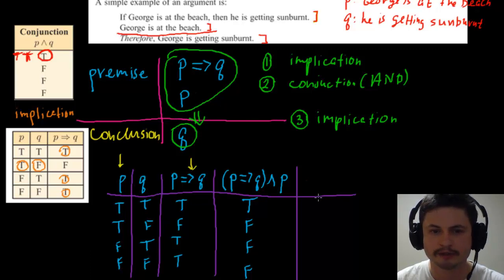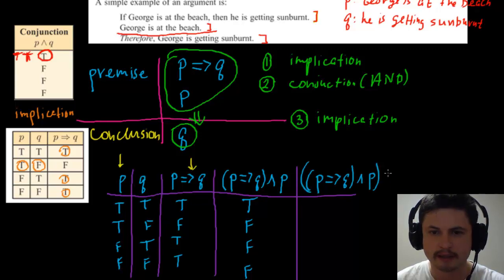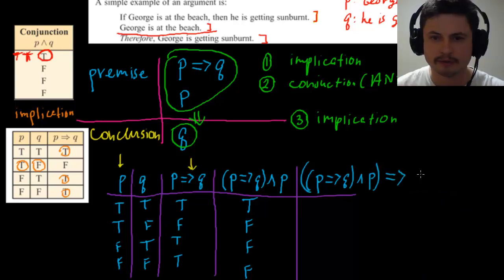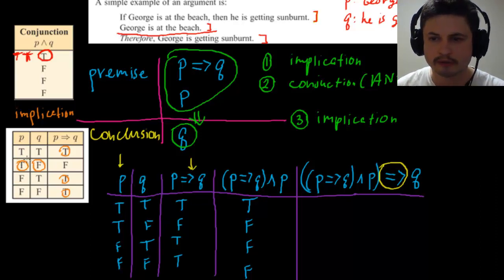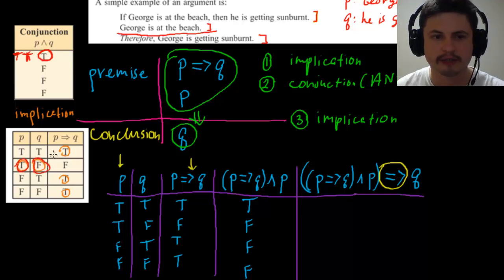Finally, our last column is the big implication: (if P then Q) AND P, leading to Q. This is the overall implication. For an implication, we're only looking for when the first part is true and the second part is false — that's the only case that gives false. If we have true-true, false-true, or false-false, it will be automatically true.